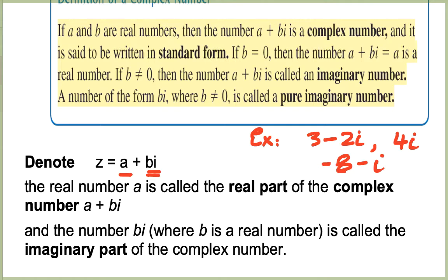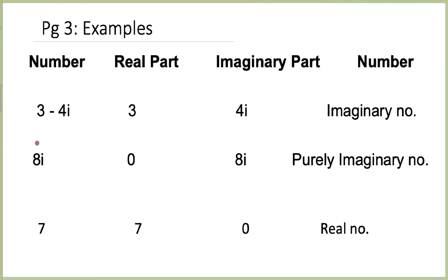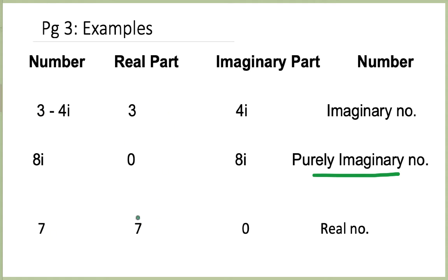Let's do some examples. Take 3 minus 4i — the real part is 3, the imaginary part is 4i, and this is an imaginary number. For 8i, there is no real part so we count it as 0, and the imaginary part is 8i — this is a purely imaginary number. For the number 7, the real part is 7, there is no imaginary part, and this is a real number.